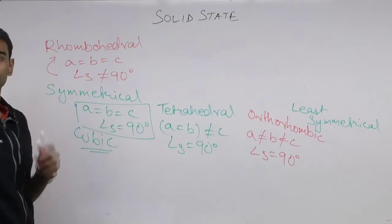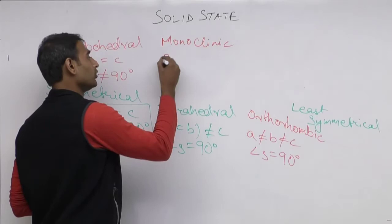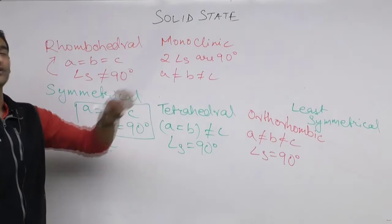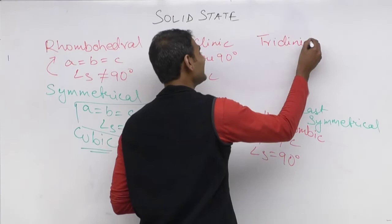After rhombohedral comes the monoclinic system — in monoclinic, two angles are equal to 90 degrees, the third is not 90, and none of the sides are equal. The sixth type is the least symmetrical system: the triclinic system, which was the answer to today's contest question. In triclinic, none of the angles are equal to 90 degrees and none of the sides are equal.